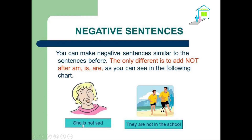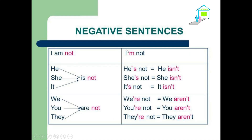Here we have an example: she is not sad — here 'not' is the negative form. They are not in the school — same thing, negative. Here we have a small chart about the full form of the negative form of the verb to be, and the short form we can also use.